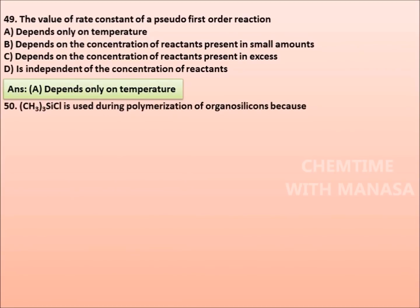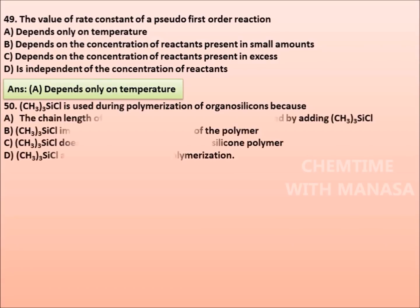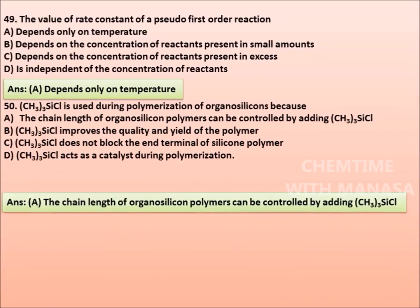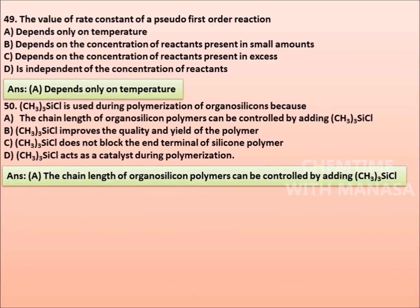Question number 50: (CH3)3SiCl or trimethyl silite chloride is used during polymerization of organosilicons because the chain length of organosilicon polymers can be controlled by adding (CH3)3SiCl, it improves the quality and yield of polymer, it does not block the end terminal of silicon polymer, or it acts as a catalyst during polymerization. And the correct answer is: the chain length of organosilicon polymers can be controlled by adding (CH3)3SiCl.